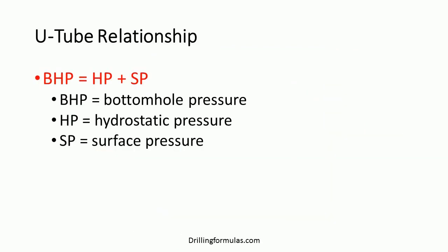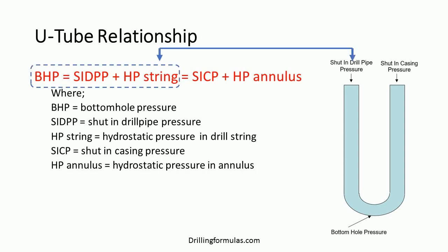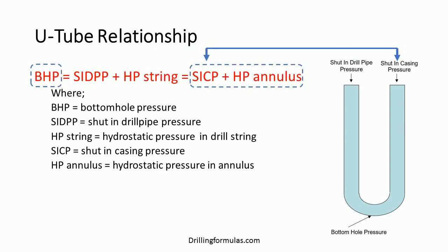U-tube Relationship is based on the bottom hole pressure equation. Bottom hole pressure equals hydrostatic pressure plus surface pressure. We can expand this equation using information from both the drill pipe and annulus side. From the drill pipe side, the bottom hole pressure equation equals shut-in drill pipe pressure plus hydrostatic pressure in the drill string. From the annulus side, the bottom hole pressure equation equals shut-in casing pressure plus hydrostatic pressure in the annulus.